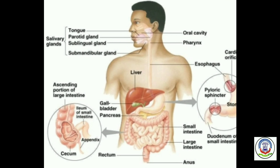Nutrition in Humans. Nutrition in humans is a complex process that involves many organs working together to form the digestive system. The digestive system consists of a long continuous tube called the alimentary canal or digestive tract, starting at the mouth and ending at the anus. It comprises organs such as mouth, food pipe or esophagus, stomach, liver, pancreas, small and large intestine, and anus. Food is digested with the help of digestive juices secreted by salivary glands, liver, and pancreas.